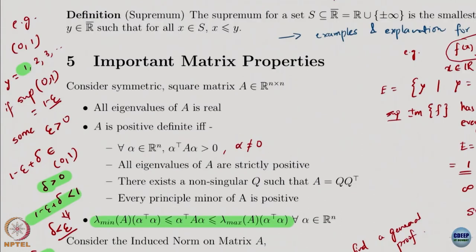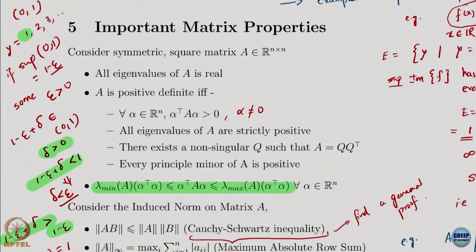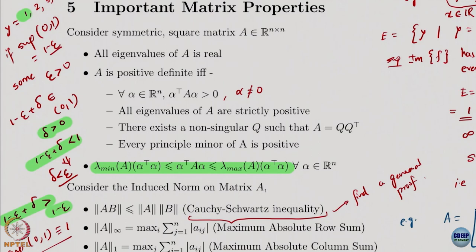It is not just an upper bound. If I take the open interval (0,1) as my set S, then 1, 2, 3, 4, 5 are all upper bounds. But the supremum is the least upper bound. If I say the supremum is 1 minus epsilon for some positive epsilon, then 1 minus epsilon plus delta also belongs to (0,1) as long as delta is less than epsilon — so 1 minus epsilon cannot be a supremum.